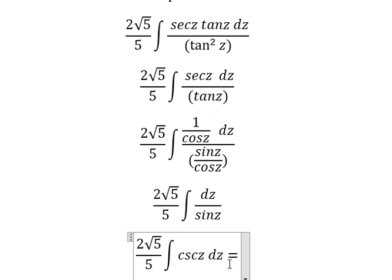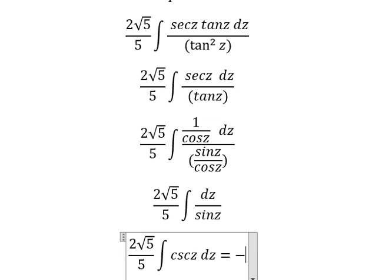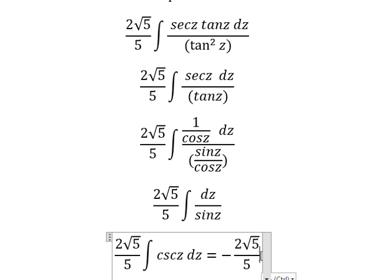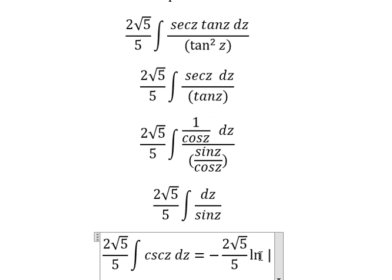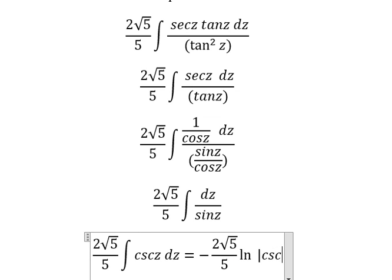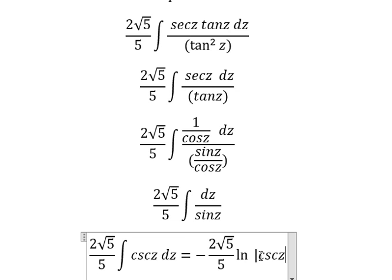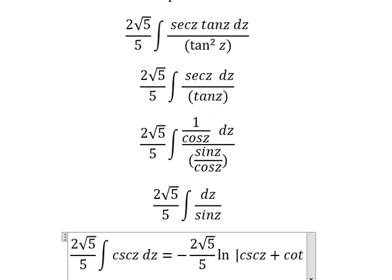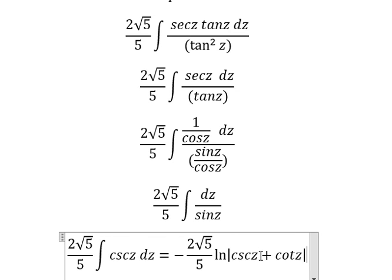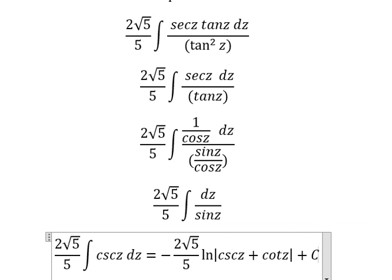The integration of cosecant(z) gives negative ln of the absolute value of cosecant(z) plus cot(z), plus constant C.